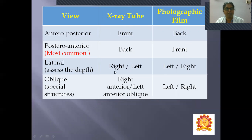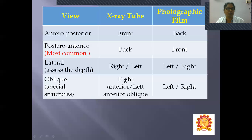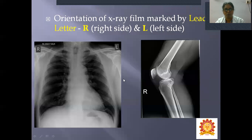Lateral view can be right lateral or left lateral. The oblique view is taken to visualize special structures like the left atrium — right anterior oblique, left anterior oblique — to visualize the heart chambers, we use this oblique view.